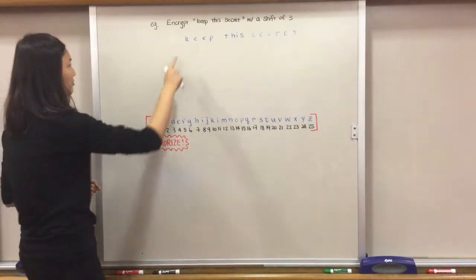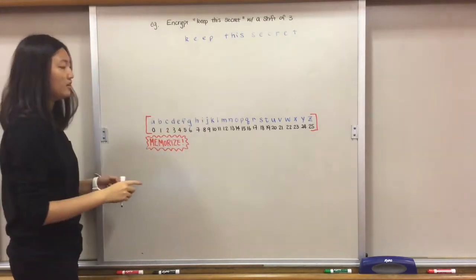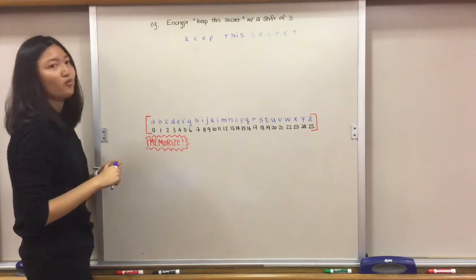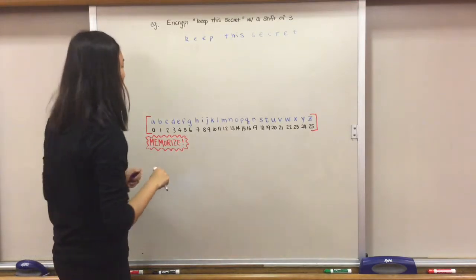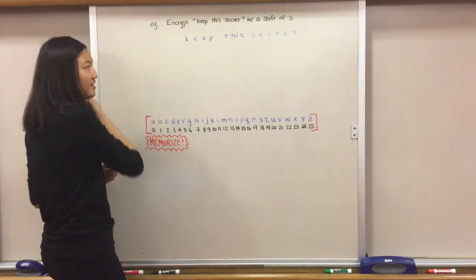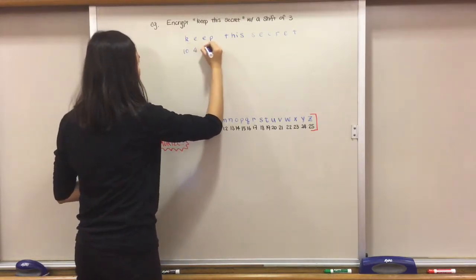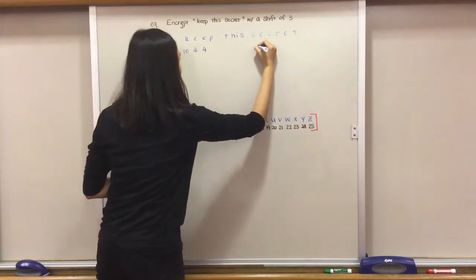First thing we're going to do is change these letters all into numbers. You can refer to the table for now, but as you practice more you will get better at it and eventually you will not need to use this reference table. So here K is 10, E is 4, and then another 4.